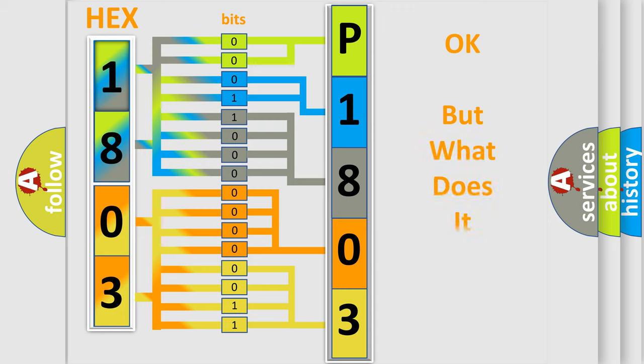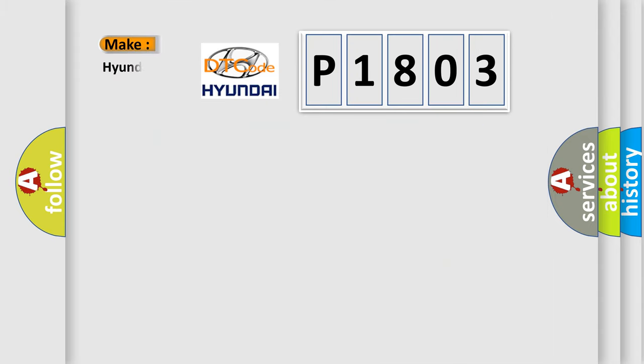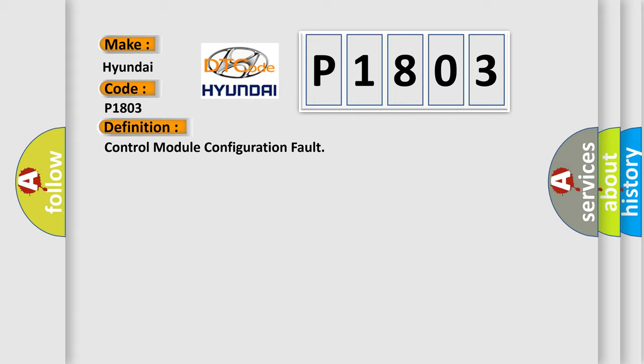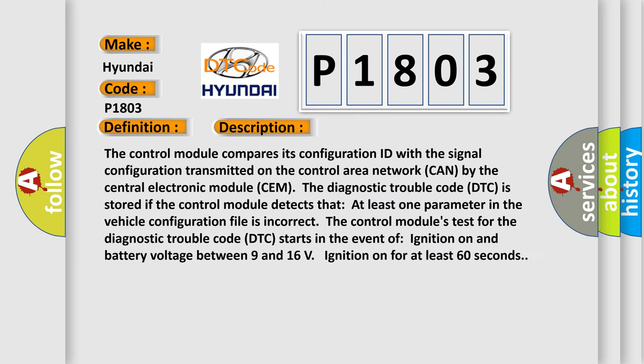We now know how the diagnostic tool translates the received information into a more comprehensible format. So, what does Diagnostic Trouble Code P1803 interpret specifically for Hyundai? The basic definition is Control Module Configuration Fault. The control module compares its configuration ID with the signal configuration transmitted on the control area network CAN by the central electronic module CEM. The DTC is stored if the control module detects that at least one parameter in the vehicle configuration file is incorrect. The test starts in the event of ignition on and battery voltage between 9 and 16 volts, with ignition on for at least 60 seconds.